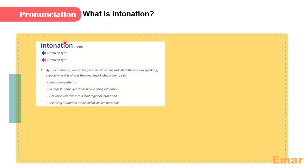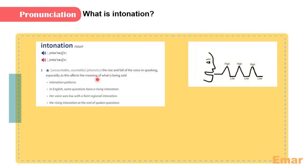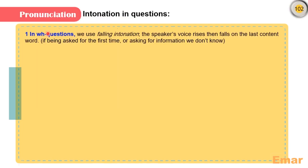But what is intonation? If you look it up in the dictionary, intonation is the rise and fall of the voice in speaking, especially as this affects the meaning of what is being said. Somehow it is the tone of speech. In WH questions — like what, where, how, when, how long, how far, etc. — we use falling intonation. The speaker's voice rises then falls on the last content word, if being asked for the first time or asking for information we don't know. Notice the WH question has rising then falling — it's a falling intonation.